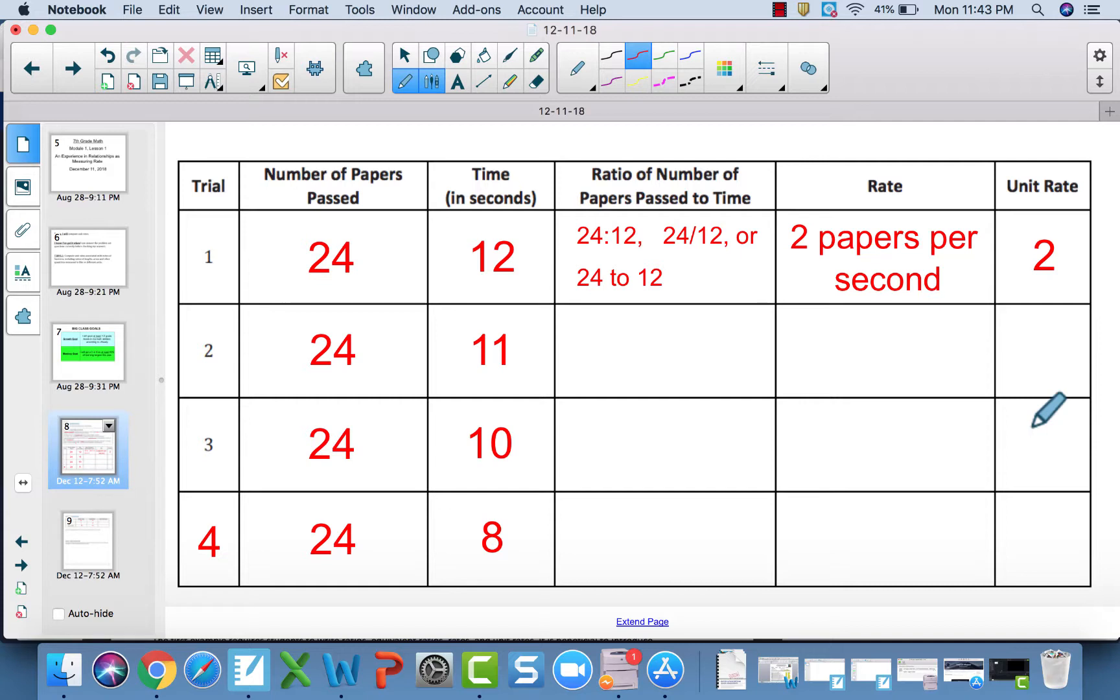What I want you to do is go through these other three trials. Write the ratio in all three forms, then write the rate, then write the unit rate. It is okay for your rate or unit rate to not be a whole number. That is possible, which is really the main difference between sixth and seventh grade. In sixth grade, usually the unit rate is almost always a whole number. But in seventh grade, the unit rate can be a fraction or a decimal. For instance, number two, 24 is not divisible by 11, so that's going to get me a decimal. Work through those and then come check the video when you are done with the table.